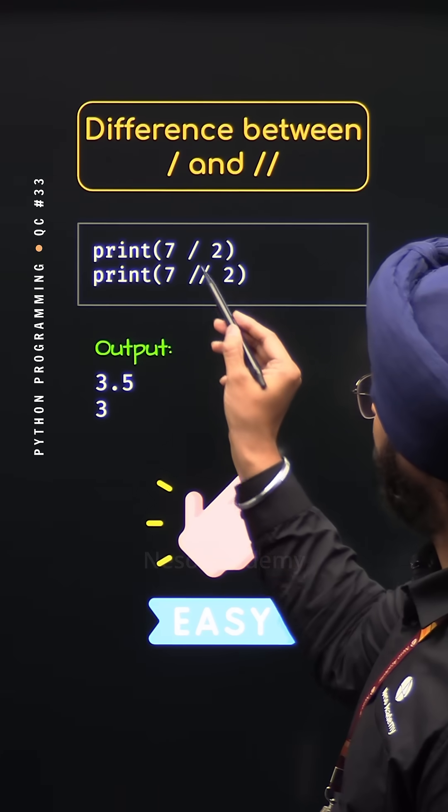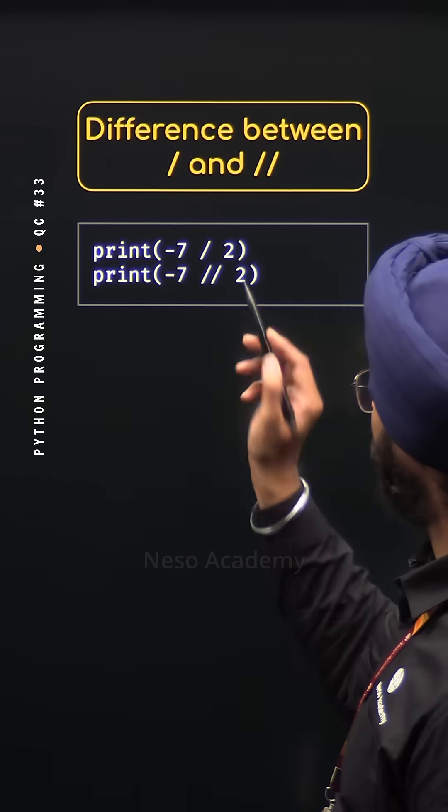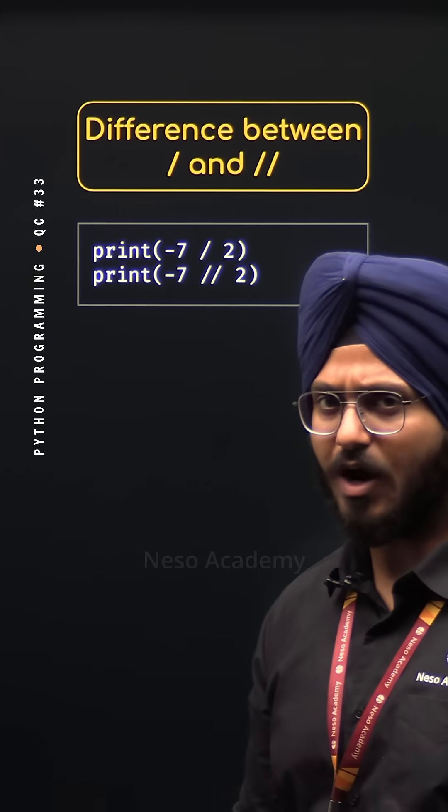Now what happens if we replace 7 by minus 7 in these two expressions? What do you think? What is the output in this case?